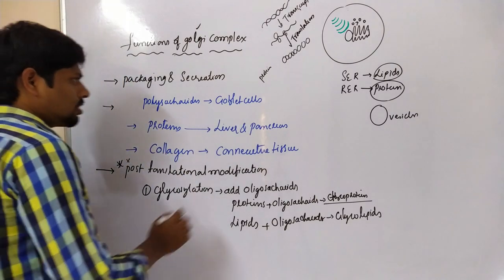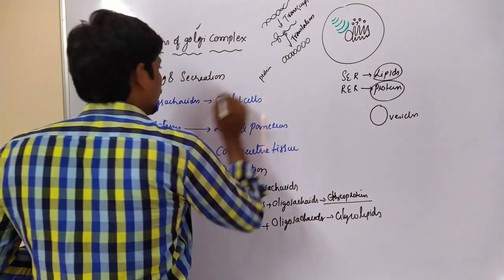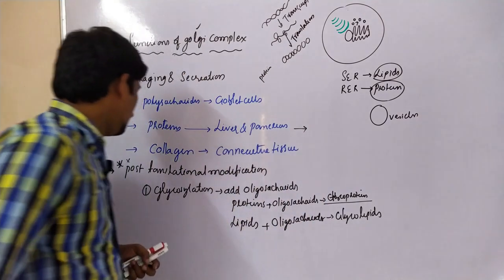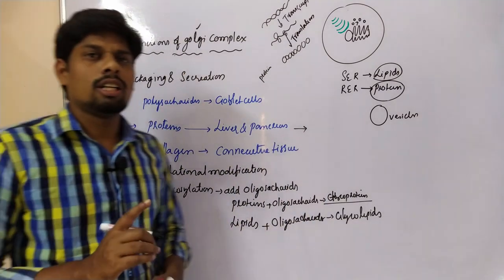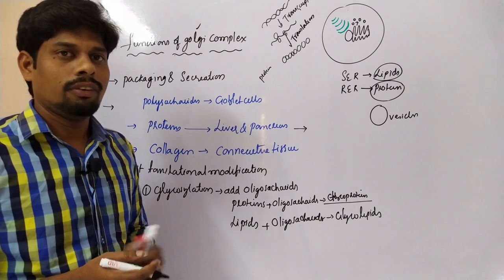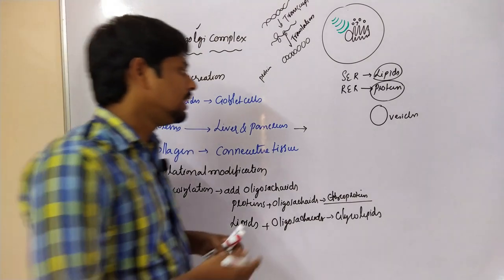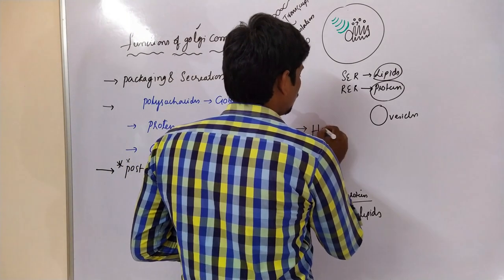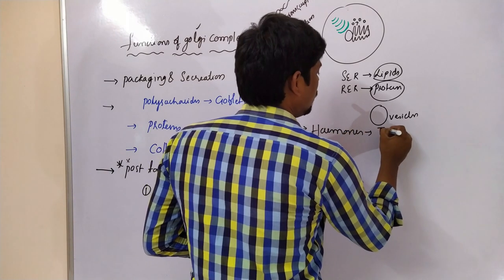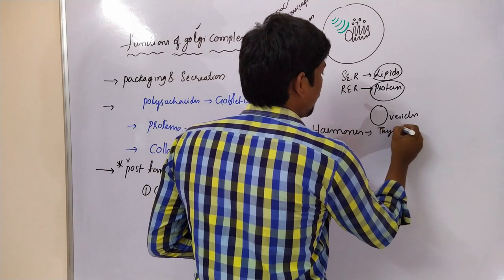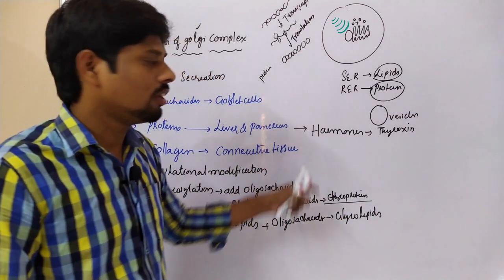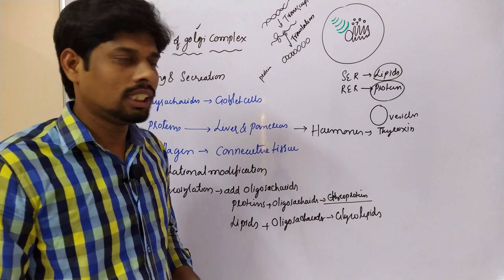The Golgi complex also secretes some enzymes. Additionally, it secretes hormones like thyroxin. Thyroxin hormone is secreted by the Golgi complex.